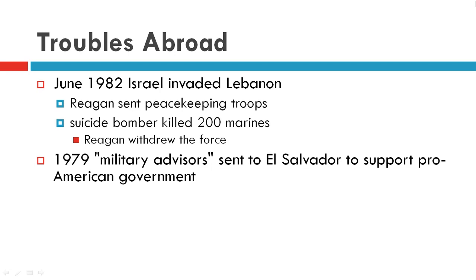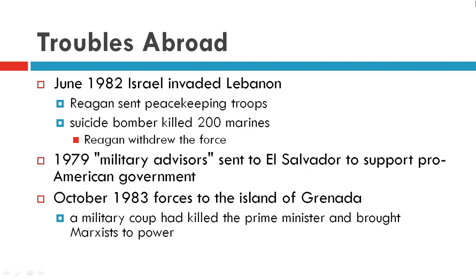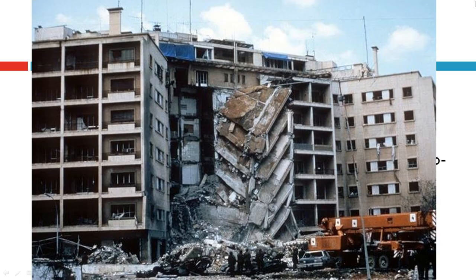In 1979, military advisors had been sent to El Salvador to support a pro-American government. And in October of 1983, forces were sent to the island of Grenada, where a military coup had killed the prime minister and brought a Marxist regime to power.